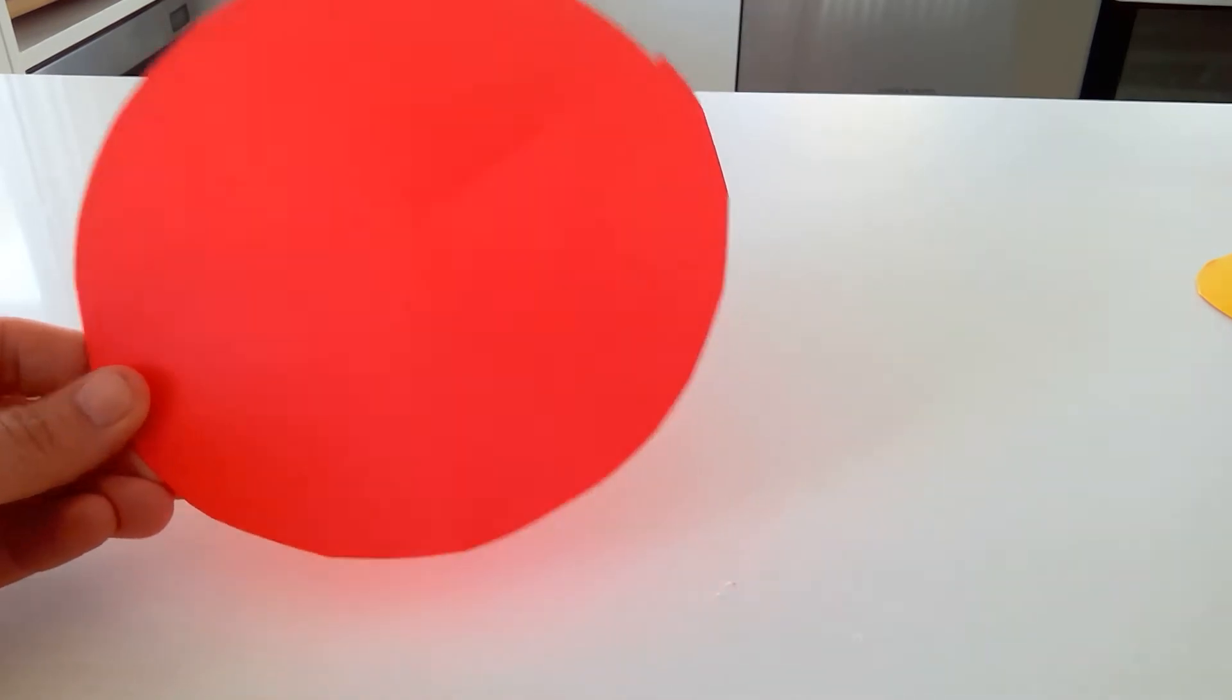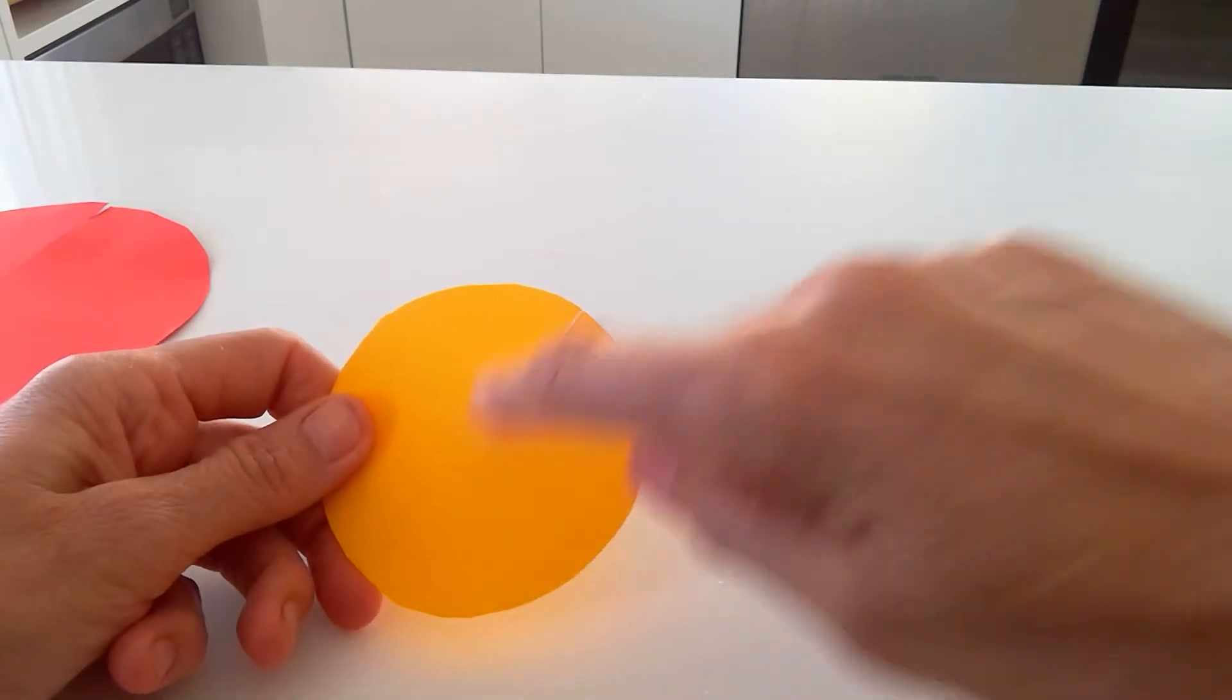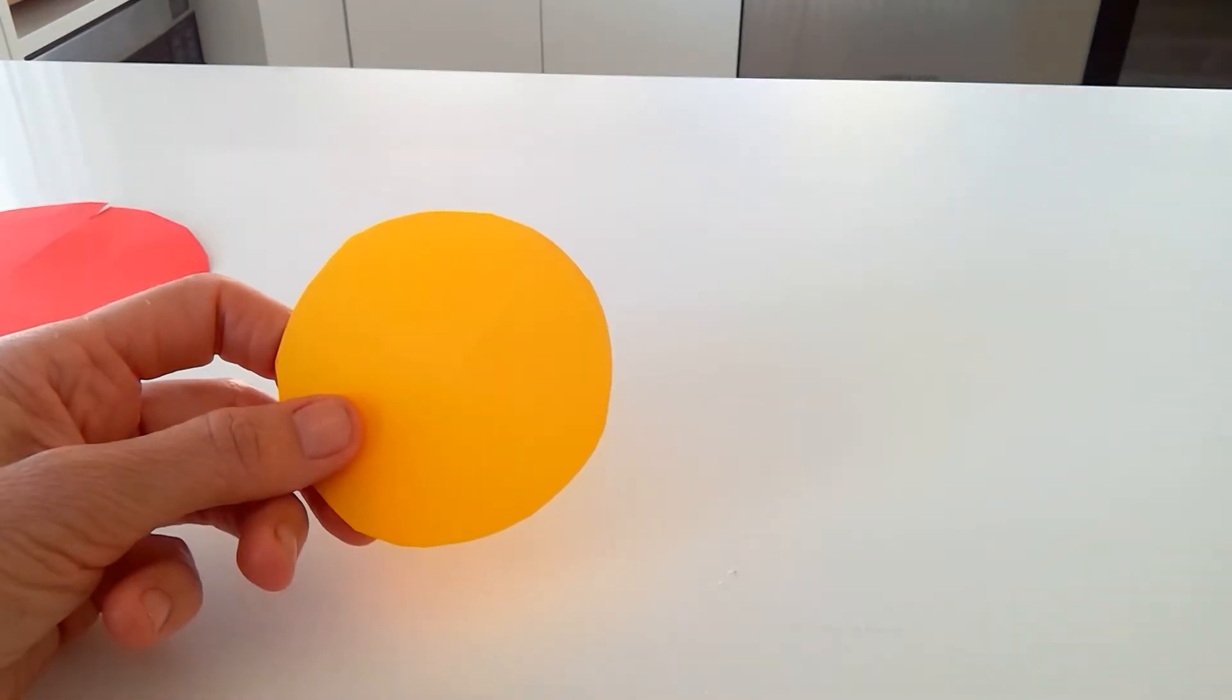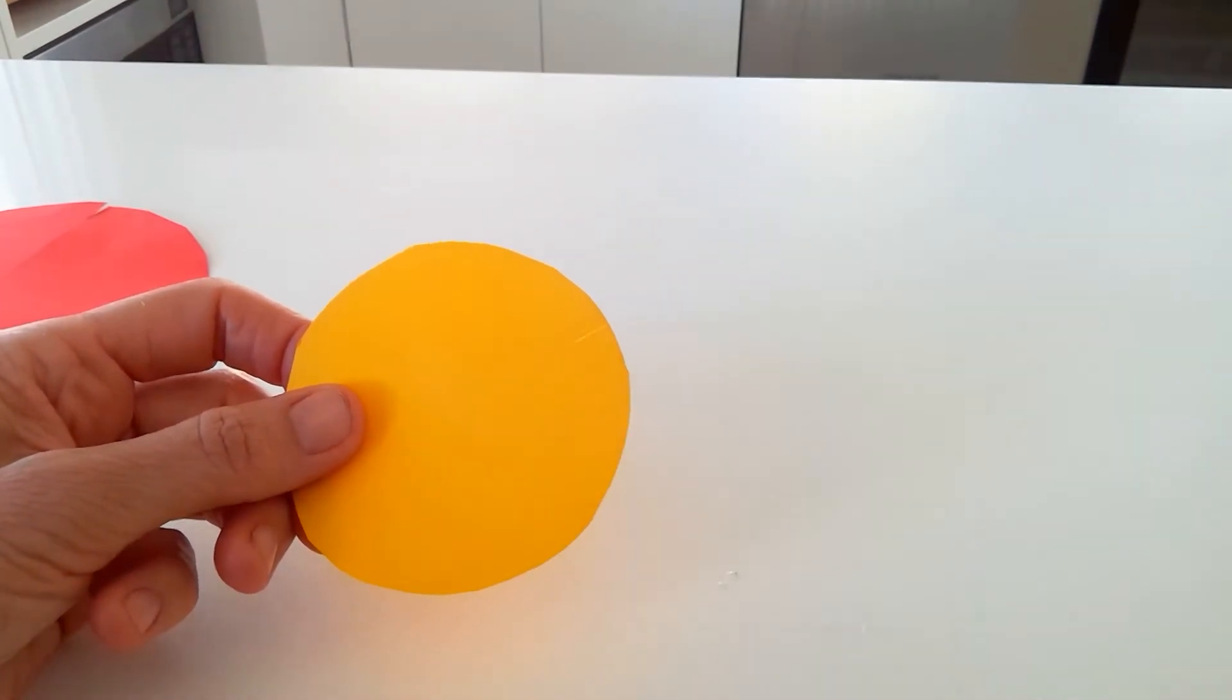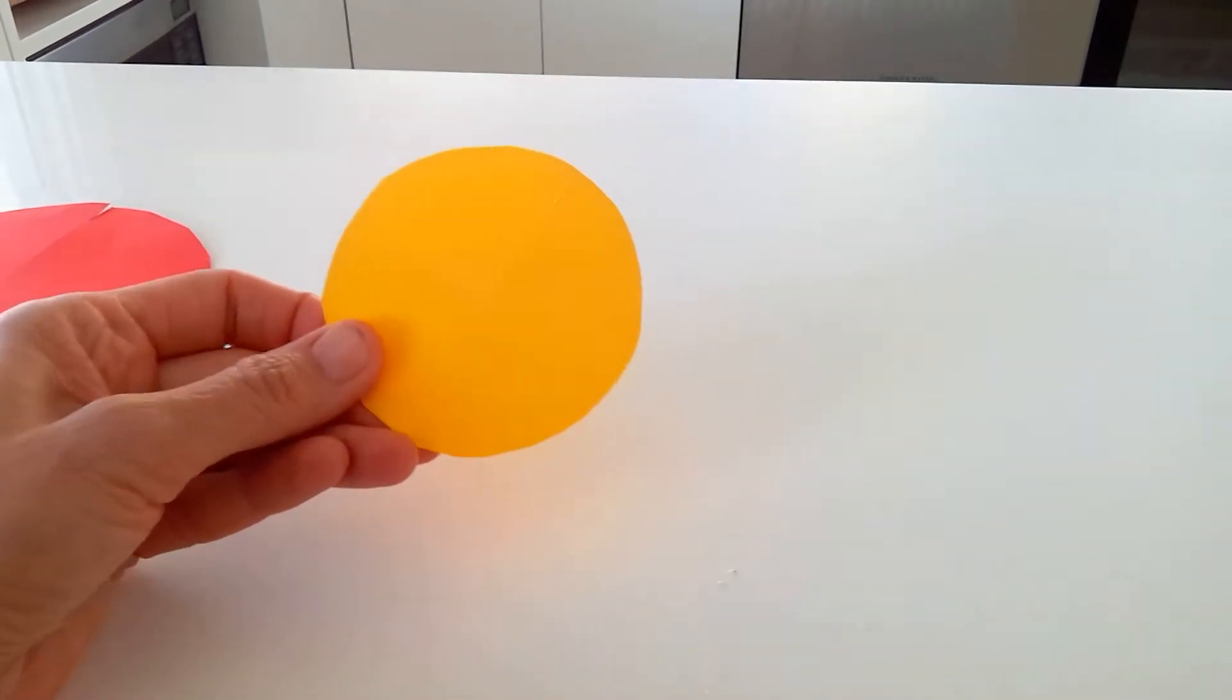Then I took a good old Aussie jar of Vegemite and I traced it onto yellow cardboard. Again, I drew a line to the centre of the circle and I cut along the line as well as cutting out the circle of course to form the bear's muzzle.